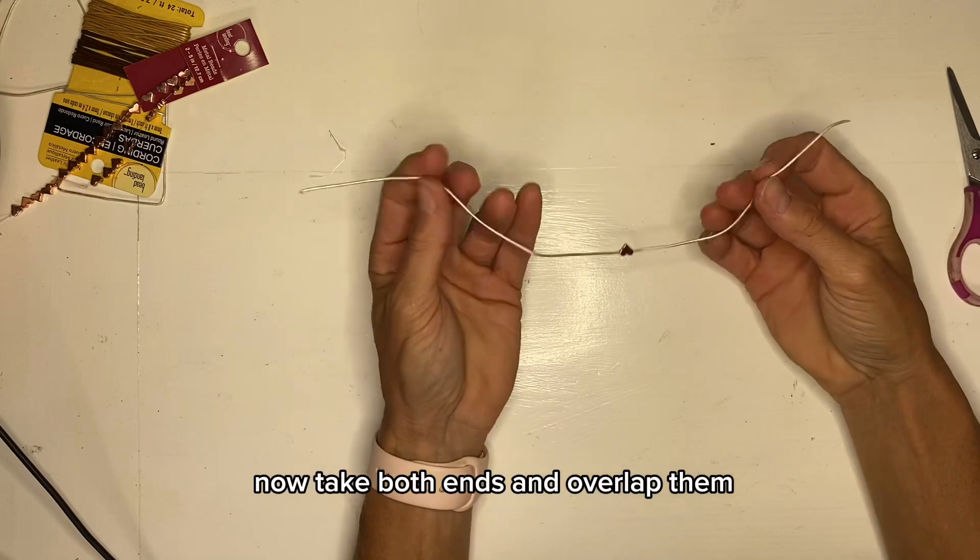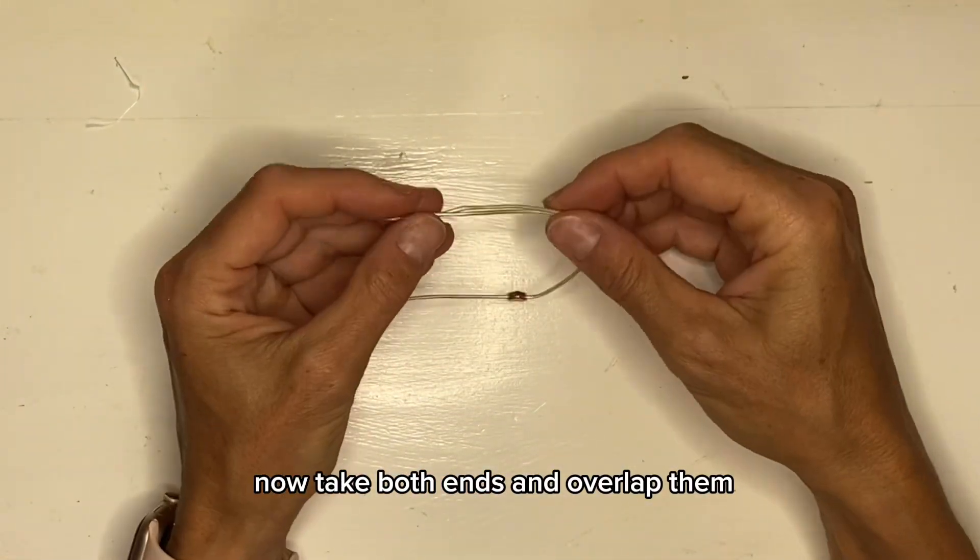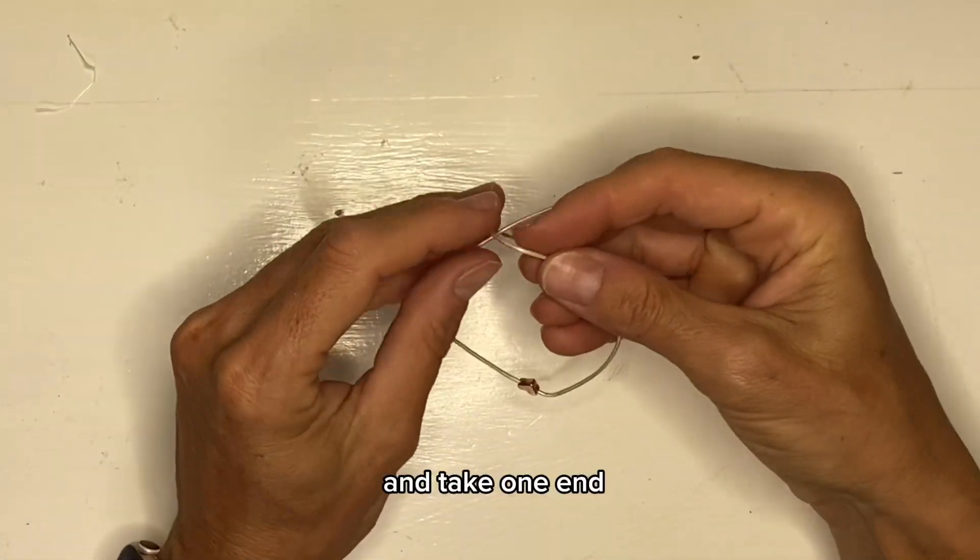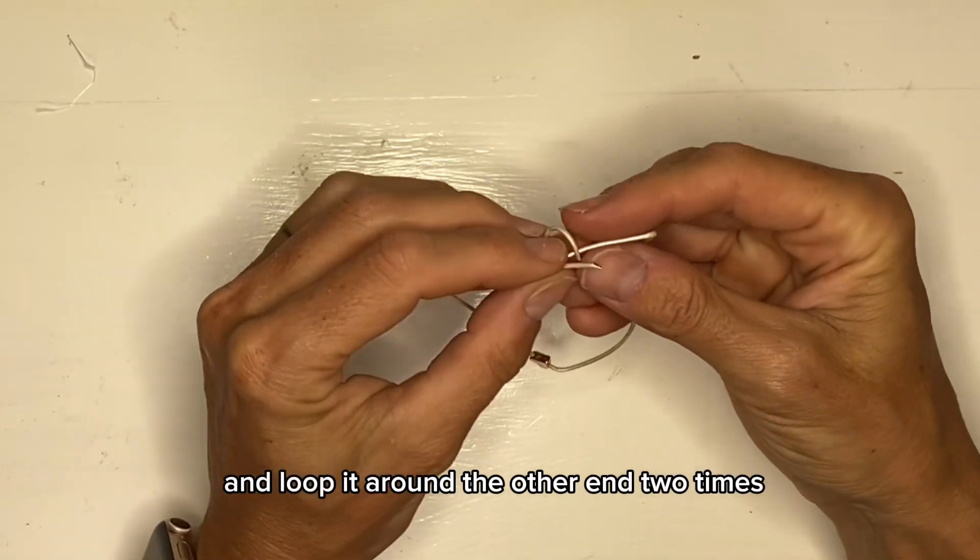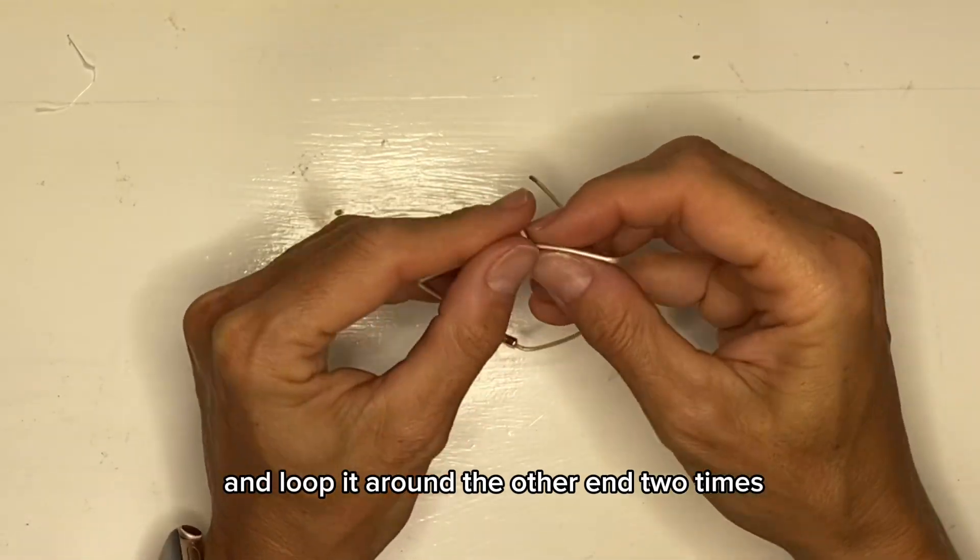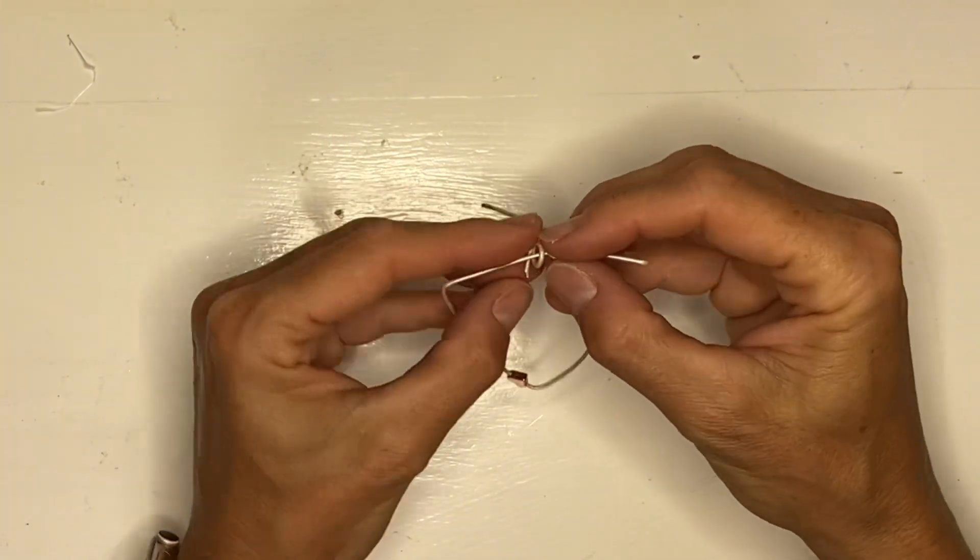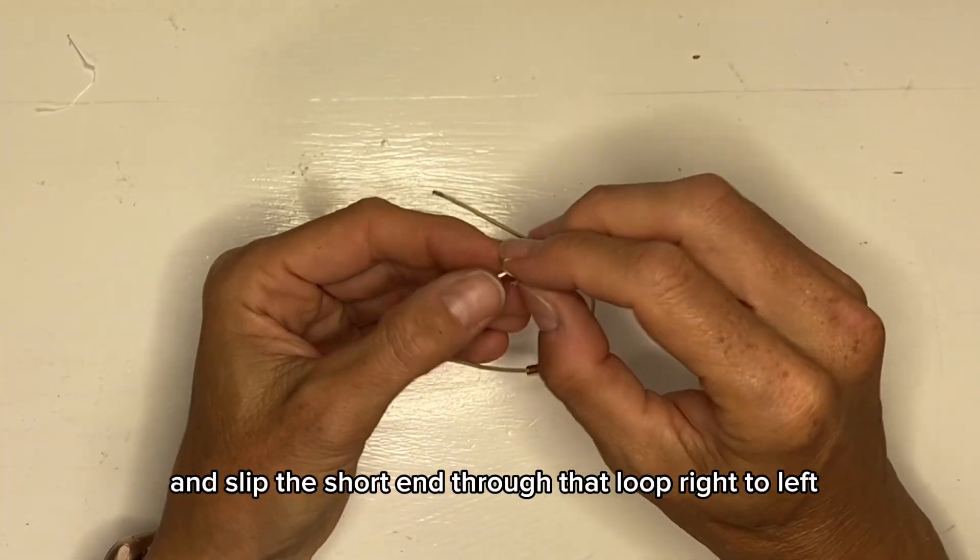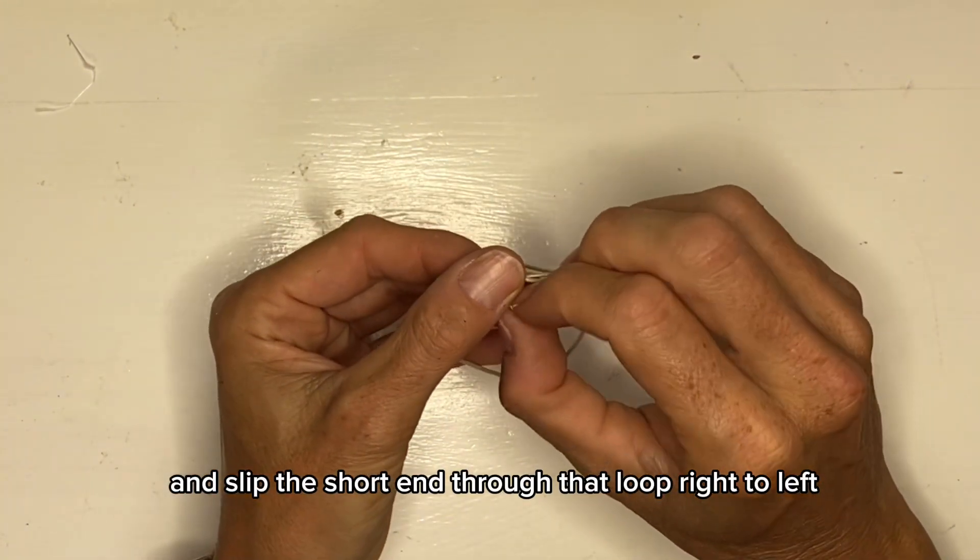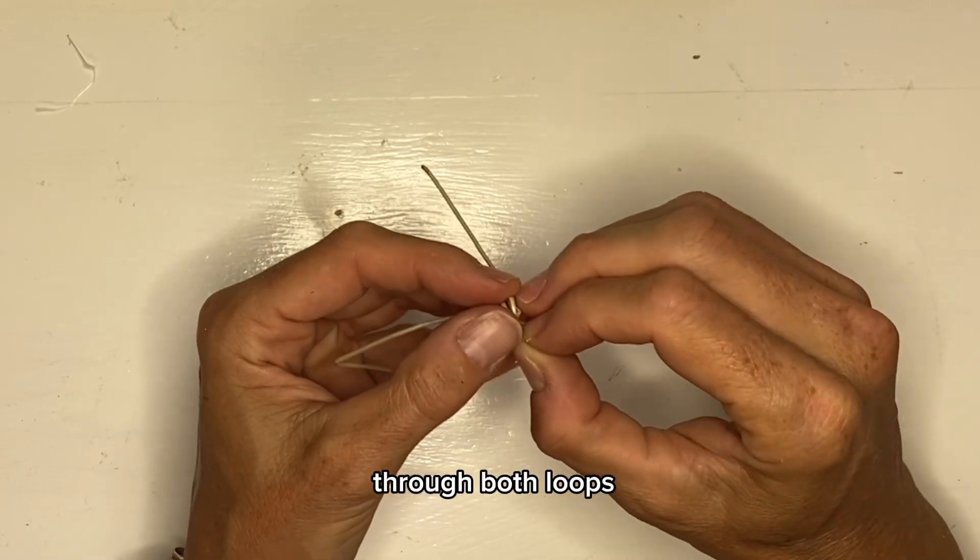Now take both ends and overlap them and take one end and loop it around the other end two times and slip the short end through that loop right to left, through both loops.